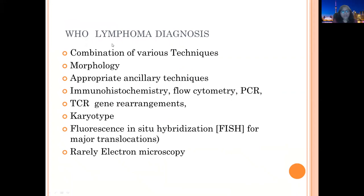Lymphoma is diagnosed with a combination of various techniques. Morphology is the key point. We need basic immunohistochemistry panels, which can be established with either flow cytometry or immunohistochemistry on the cell block. Further testing includes PCR, TCR gene rearrangements, karyotype, and FISH studies — definitely needed for major translocations. Very rarely, electron microscopy may also be needed, especially when looking for Langerhans cell histiocytosis.